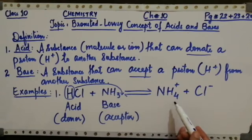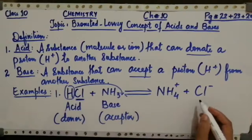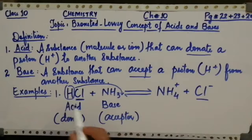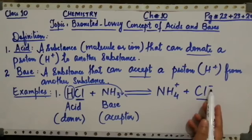NH3 becomes NH4+ in this manner. What happened to the Cl, that is chlorine? It becomes chloride ion, written in the form of a negative ion, because it has separated from its compound and converted into its respective ion — chloride ion having a negative charge on it.